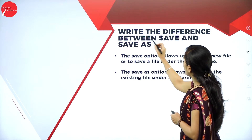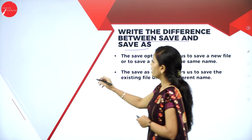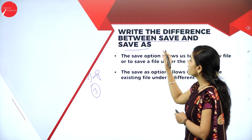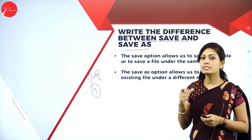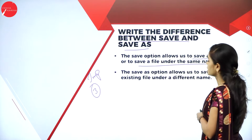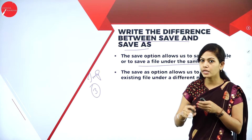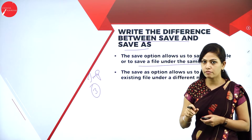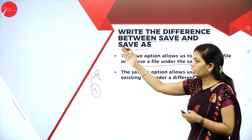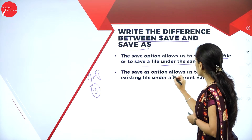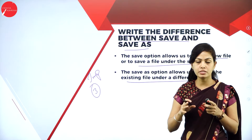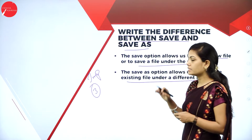Next question: write the difference between Save and Save As — very important question for three marks. The Save option allows us to save a new file or save a file under the same name. If you want to save a new document, click on the File button and go to the Save command. The Save As option allows us to save the existing file under a different name. If you already have a saved document and need to rename it, you can use the Save As command.